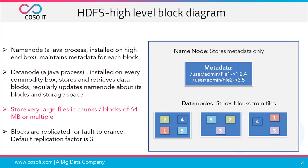Since HDFS is a block-structured file system, blocks are stored across the cluster of machines in data nodes and are stored at a size of 64 megabytes or multiples of it. HDFS uses data replication as a strategy to provide fault tolerance, and by default it replicates data at three places. The application using HDFS can also configure the replication factor.